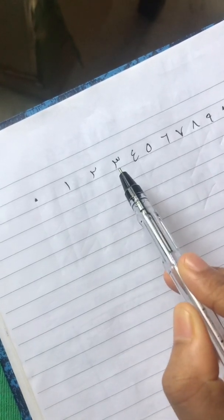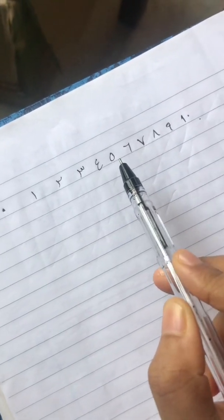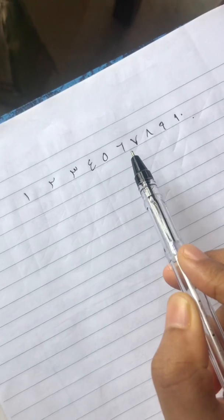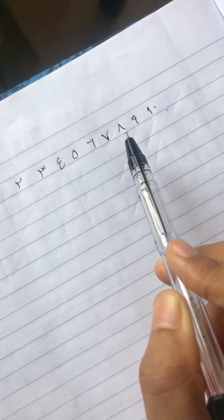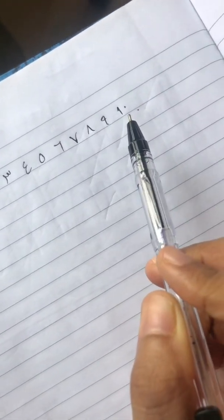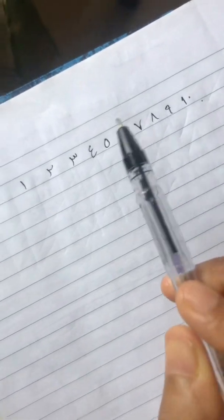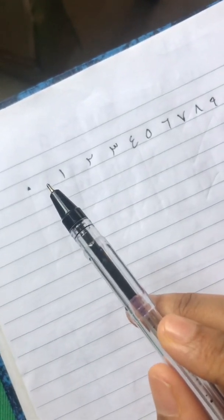wahid, ithnayn, thalatha, arba, khamsa, sitta, saba'a, thamania, tis'a, ashara. Okay, once more: cipher, zero.